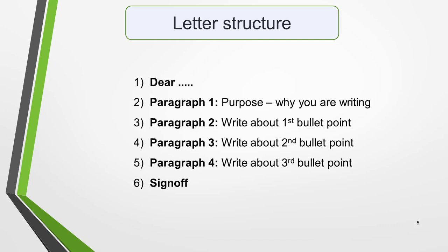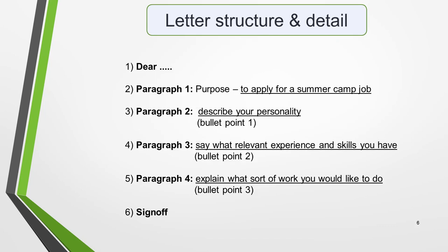All you need to do to create your plan is to add in the details from the question. The person we're writing to is the camp organiser, so that's who we'll address in our greeting. Paragraph 1 is the reason or purpose for writing, which is to apply for a summer camp job. Paragraph 2 will be about the first bullet point — describe your personality. Paragraph 3 will be about the second bullet point — say what relevant experience and skills you have. And paragraph 4 will be about the third bullet point — explain what sort of work you'd like to do. Finally, comes the sign-off of the letter.